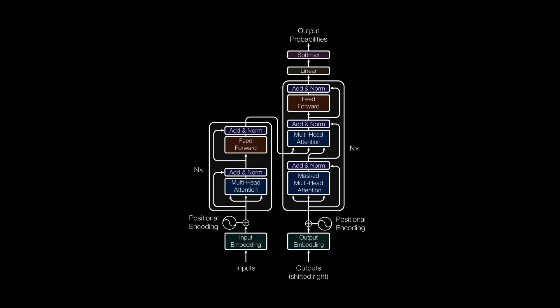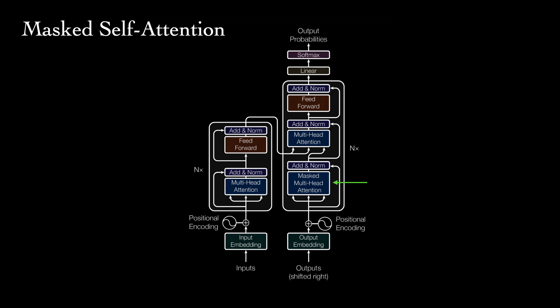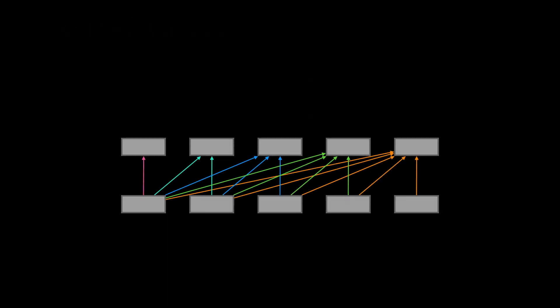Looking at the right side of the figure, we see the decoder. Many of the components are the same, so we'll specifically look at the differences. Just as we did for the encoder's input, we compute embeddings and positional encodings for the decoder's input, which is the target sequence. But then we reach this masked multi-head attention block. A mask is needed to ensure that we respect the temporal dependency of the output sentence. At deployment time, the output sentence is sampled autoregressively, one word at a time. The prediction at position t should only depend on the words that were sampled prior to t. Incorporating a mask during self-attention ensures this while still allowing parallel computation during training.